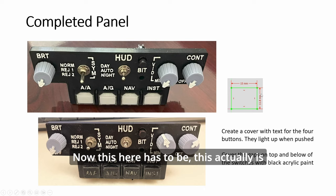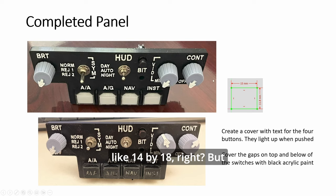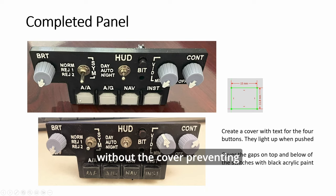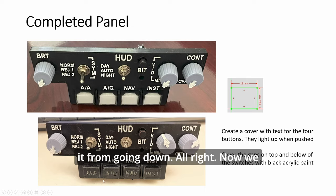Now this here has to be... This actually is like 14 by 18. Right? But you see this cover is smaller. Because when you put this cover on this here, you want it to still be able to push down. Okay? Here at the sides, there is a plastic, kind of like a fence. So you want to make... It has to be still small enough for the whole button to push down without the cover preventing it from going down. All right?